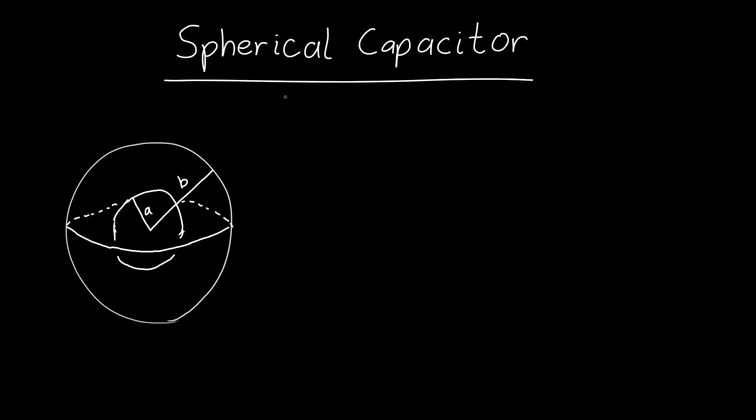In this video, we're going to find the capacitance of a spherical capacitor. This type of capacitor is made out of a conducting ball of radius A, and outside that ball, there's a conducting shell, a spherical shell of radius B surrounding the ball.